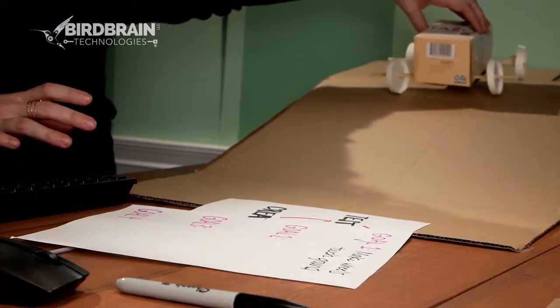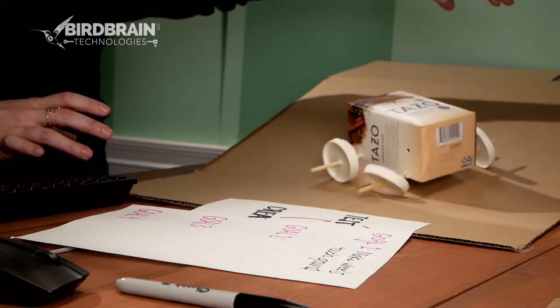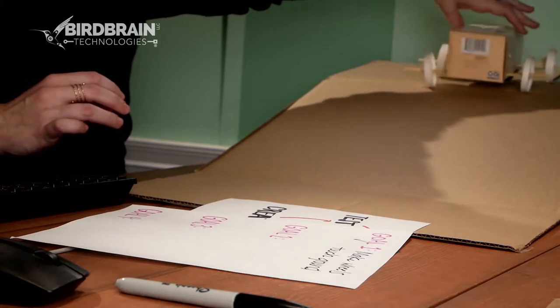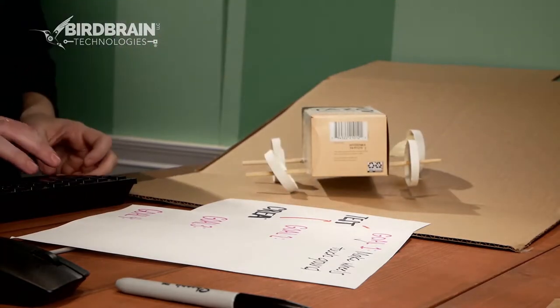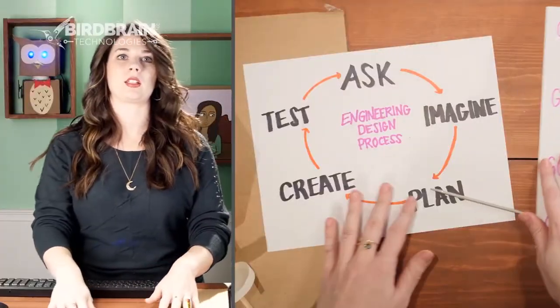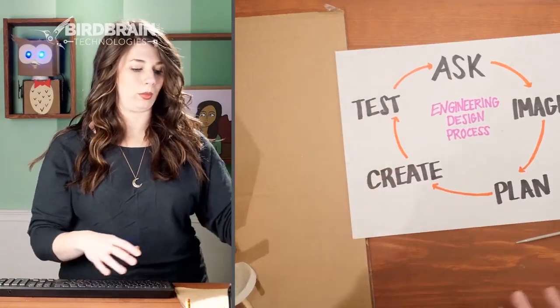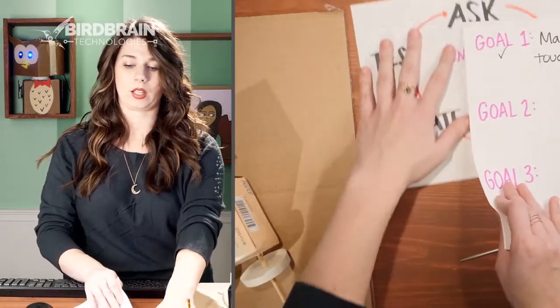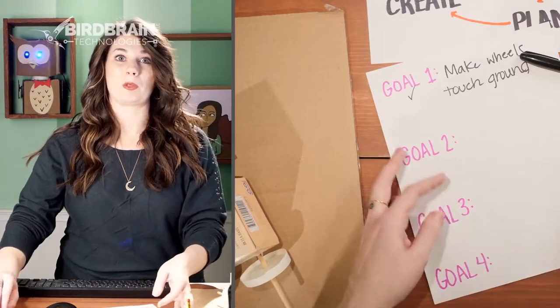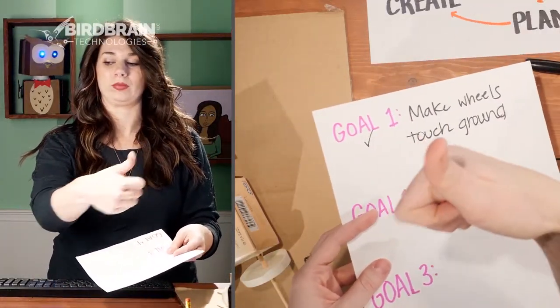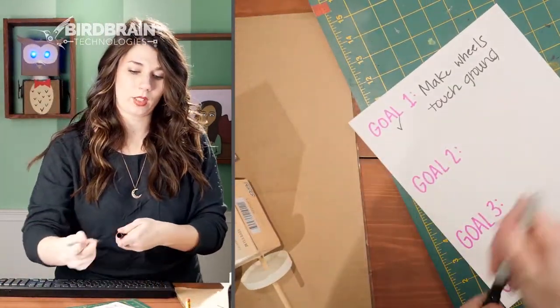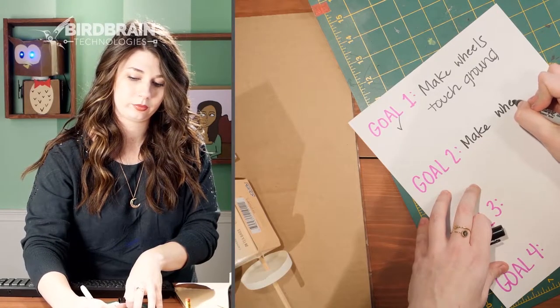Let's see what happens when I try to send it down the ramp. Can you guys see what it's doing? When I try to send it down the ramp, the wheels aren't spinning. That's not what we want. We did our engineering design process: we found the problem — the wheels weren't touching. We imagined a solution, planned it, made it, and tested it. Now we've got another problem: the wheels aren't spinning. So I think our second goal has to be to get the wheels to spin.